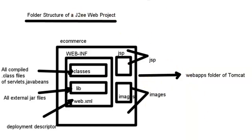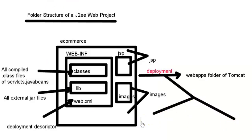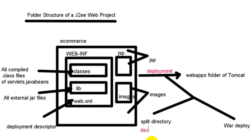This procedure is called deployment, and deployment is of two types: one is called split directory deployment and one is called WAR deployment. In split directory, you take the entire folder structure and put it within the webapps folder of Tomcat. In WAR deployment, you create a WAR file of the entire folder structure — similar to a ZIP — using Eclipse or command line tools, and put that WAR file directly within the webapps folder. Split directory is generally used during the development stage, while WAR deployment is generally done for the production environment.